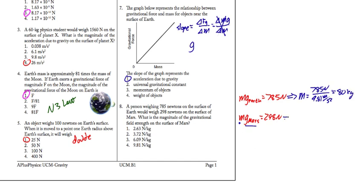Well, knowing that, then I can say that the acceleration due to gravity on Mars, or gravitational field strength, is going to be 298 newtons over the mass, which we just determined is 80 kilograms, which is going to be about 3.72 newtons per kilogram. Answer 2.